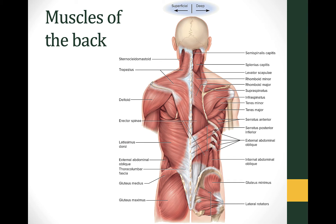On the superficial side we can see the deltoid at the shoulder. If you touch your shoulder and move onto your arm you can feel your deltoid — it abducts the arm, lifting it away from the body. Also on the superficial side is the trapezius, which originates on the cervical vertebrae and inserts on the scapula. It has a portion in the neck and runs all the way down to the thoracic vertebrae.